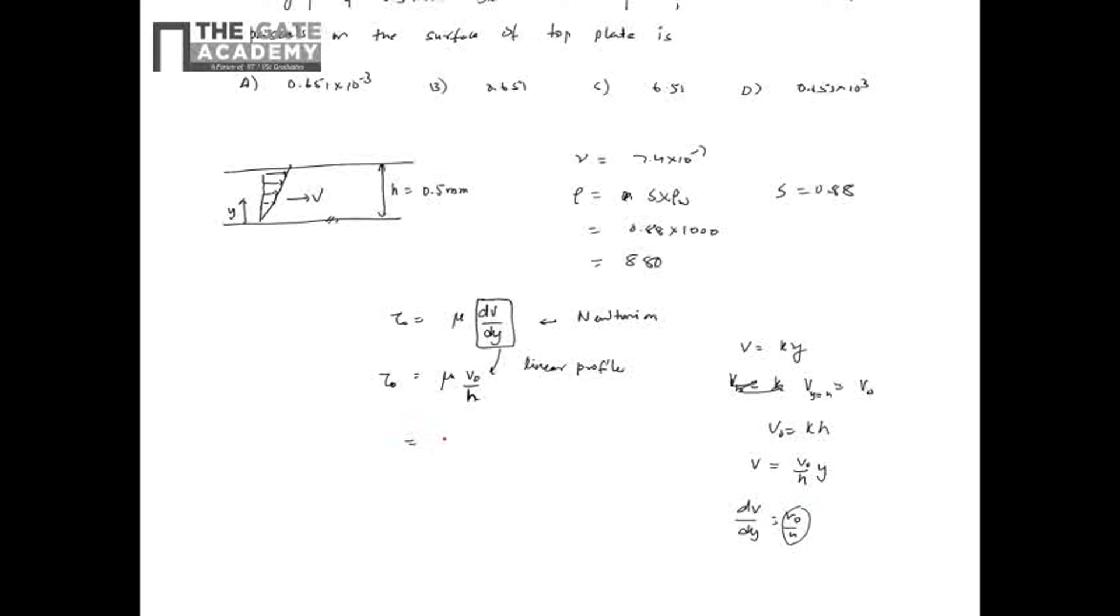And when I do dv by dy it is v0 by h, it is constant everywhere. So, v0 by h. So, let's write down mu is dynamic viscosity that is nothing but kinematic viscosity into density into v0 by h.